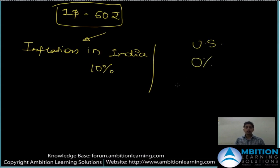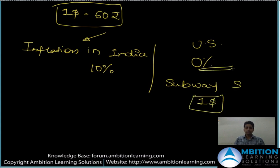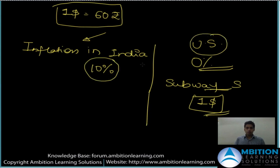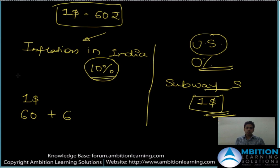Let's say inflation in India is 10 percent and inflation in the US is 0 percent — this is hypothetical, just to understand the concept. Now let's say a subway sandwich in the US costs one dollar. When there is no inflation, this subway sandwich is costing one dollar. But in India there is 10 percent inflation. So when someone from the US comes to India and buys this sandwich, how much should it cost him?